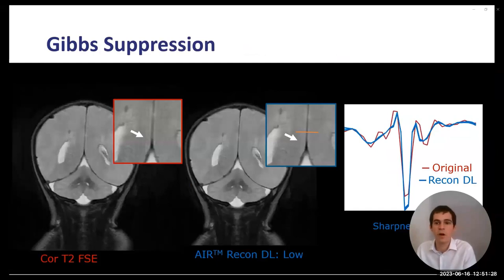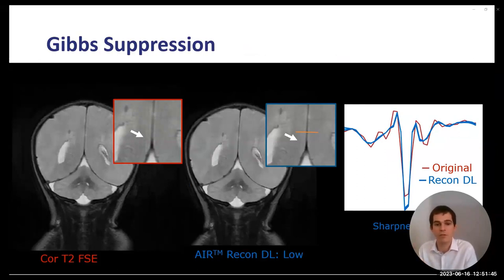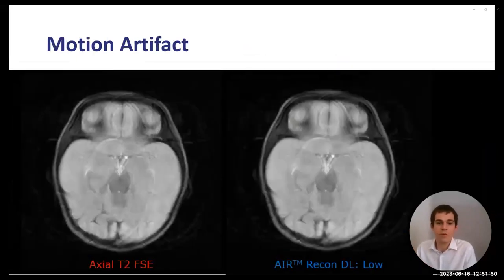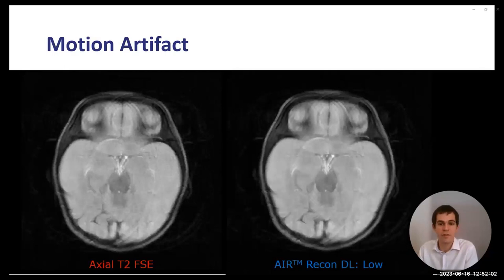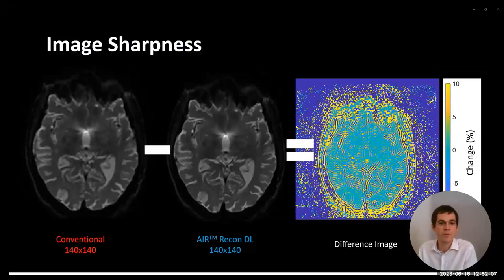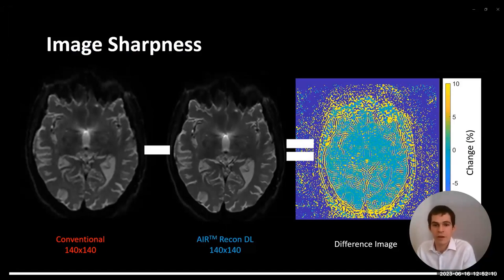A clinical example of T2 FSE acquired without ARDL on the left shows a two-year-old patient, with a line profile through the midline showing in red the original signal and in blue the Recon DL — an improvement in sharpness of around 30% in this case. ARDL won't improve motion artefact, because that's due to a sampling problem where different lines of K-space appear in different positions as the patient moves. Subtracting conventional from ARDL images shows suppression of Gibbs artefact at tissue boundaries and sharpening between grey matter, white matter, and CSF.